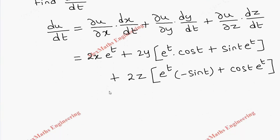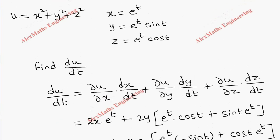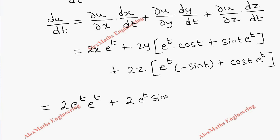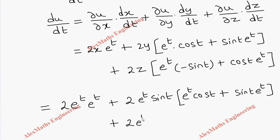Now we have to replace the values for x, y, and z. So x is e power t and already one more e power t is here, giving 2 into e power t into e power t. Then y is e power t into sin t, so we put sin t, and from the remaining terms we write e power t cos t plus sin t into e power t.